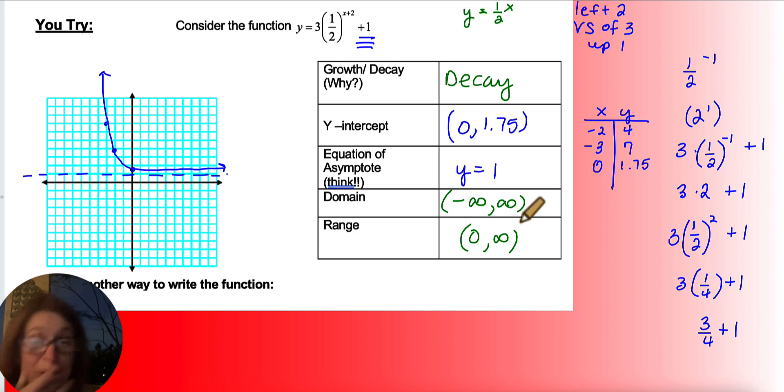What's another way we could write this function? I suggest you try it. Try it, and then let's come back and see if you've got it. So it would have been 3 times 1 half to the x times 1 half to the 2, just working backwards. Remember, we keep talking about this idea of working backwards. Plus 1. 1 half to the 2 is 1 fourth.